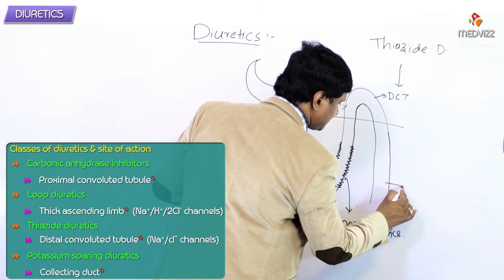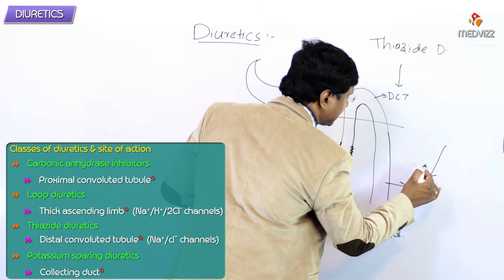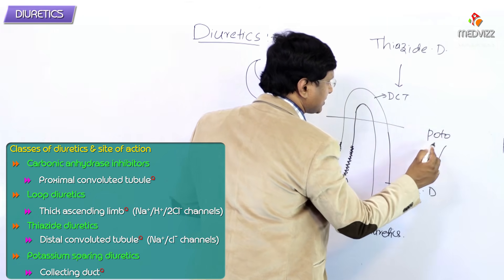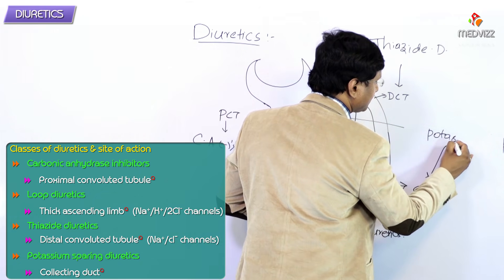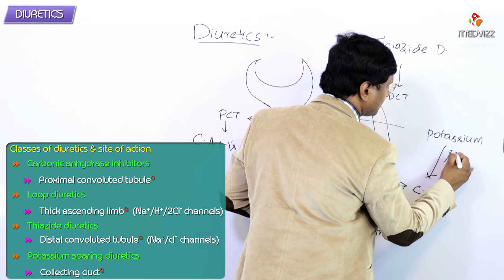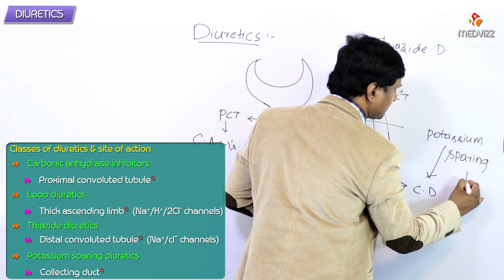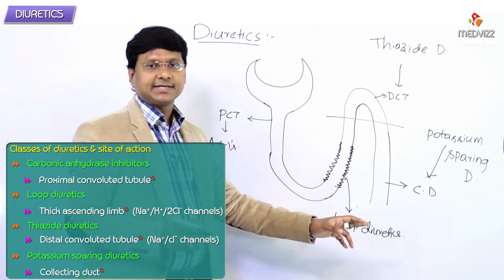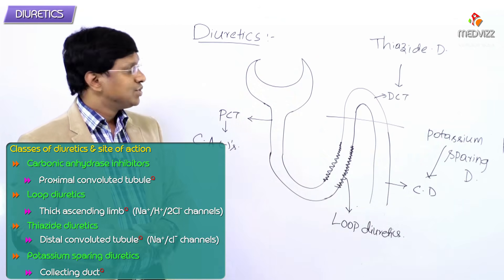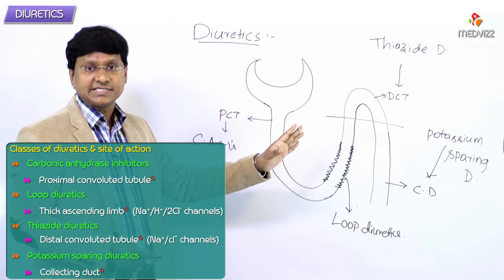Next we have the potassium-sparing diuretics. The potassium-sparing diuretics act on the collecting duct. So on this collecting duct the potassium-sparing diuretics will act. These are the various sites at which these diuretics act.